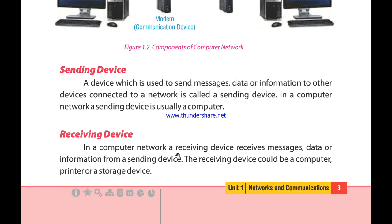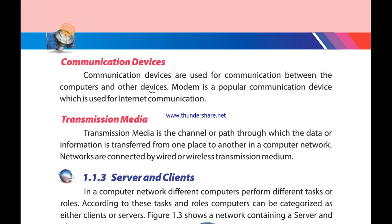In a computer network, a receiving device receives messages, data, or information from a sending device. The receiving device could be a computer, printer, or storage device. Communication devices are used for communication between computers and other devices. A modem is a popular communication device which is used for internet communication.